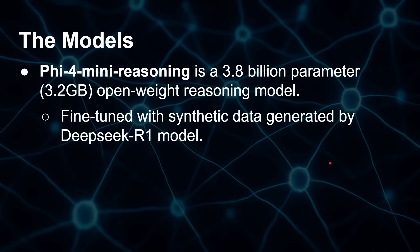Finally, we have Phi-5.4 Mini reasoning, which is what we're focusing on today. It's only 3.8 billion parameters, meaning it's 3.2 gigabytes — a much more reasonable size. You can start running that on even a 4 gigabyte GPU, and you can get it running on a Raspberry Pi.